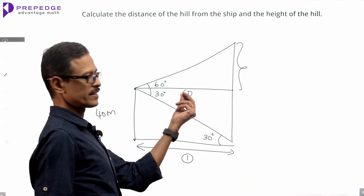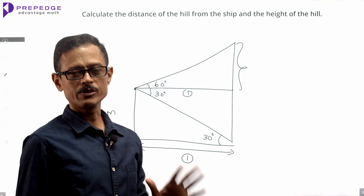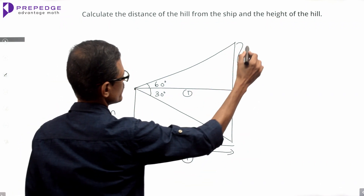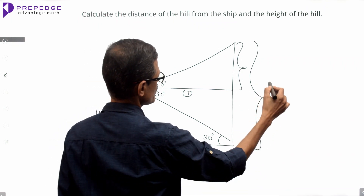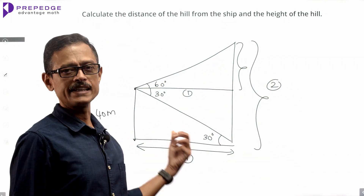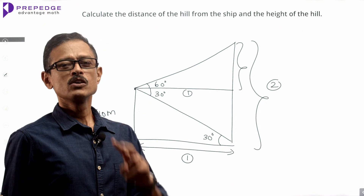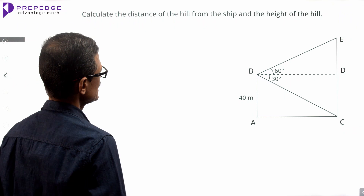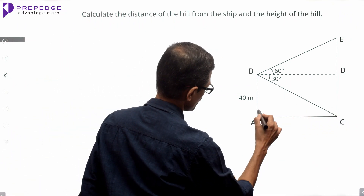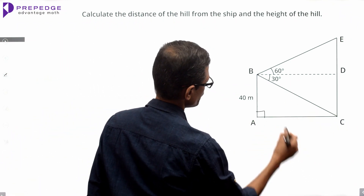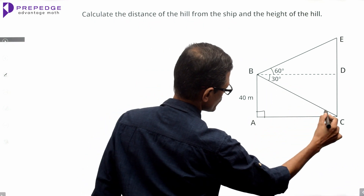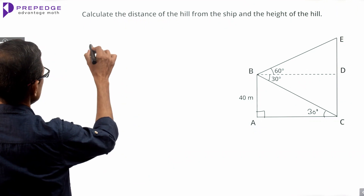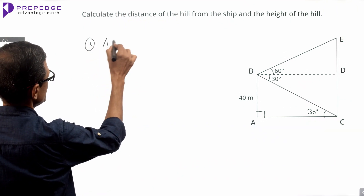Using tan 60 we'll find the opposite side ED, since we know the adjacent side. This height plus 40 meters will give us the total height of the hill. Start by computing the distance between the hill and the ship. AC is what we are trying to find. Look at right triangle BAC — angle of depression is 30 degrees, so angle of elevation from C to B is 30 degrees.